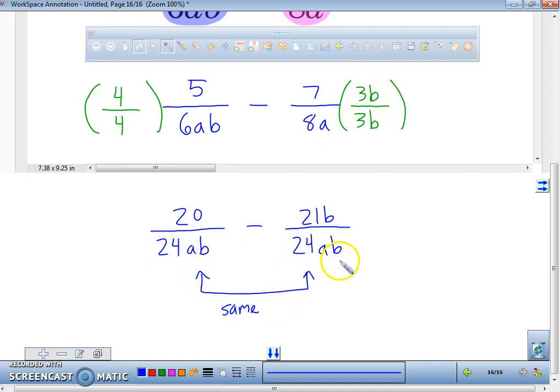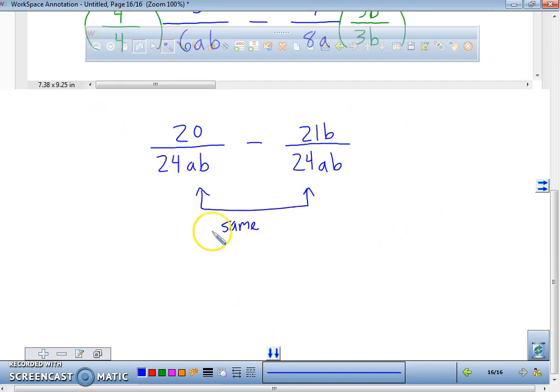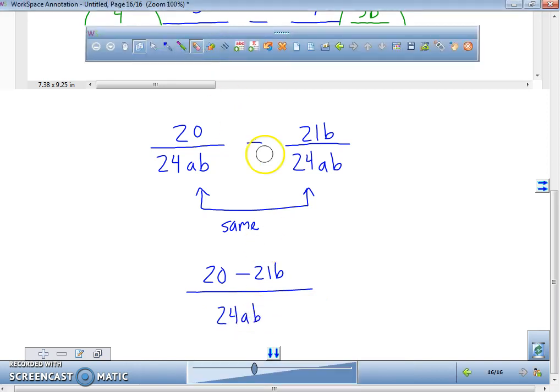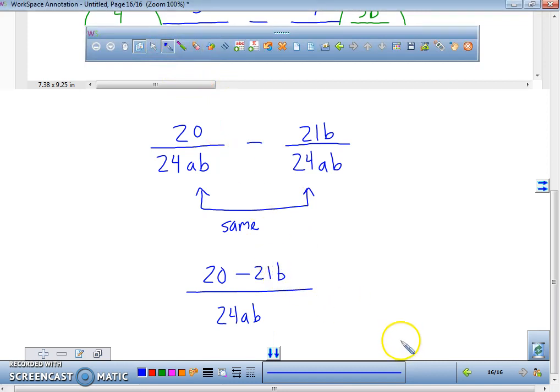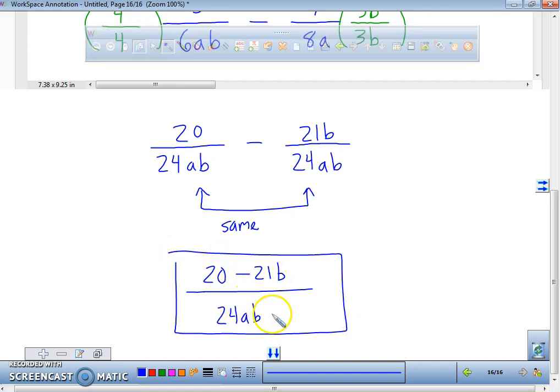7 times 3B is 21B. Because you have the least common denominator, now you can take these numbers and simply subtract them, but they're not like terms. So you would write 20 minus 21B all over 24AB. Your final answer is 20 minus 21B over 24AB. Just remember, that 24AB was our least common multiple. You always have to find your least common multiple first.